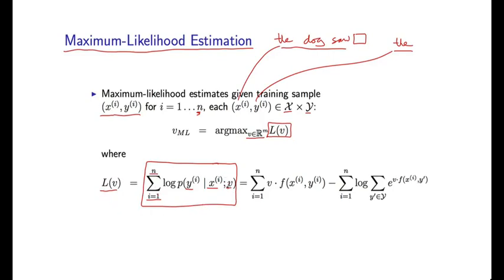Now intuitively, we would like these probabilities to be as high as possible, reflecting the fact that our parameters v fit the data well. And so if we maximize this function L of v, we will have put high probability on the training examples that we actually see.